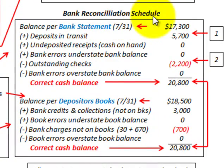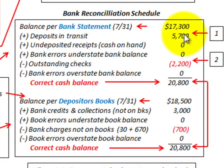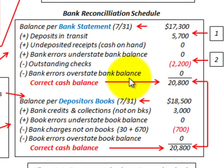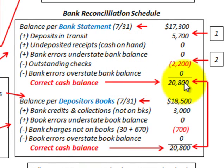Let's go back down to our bank reconciliation schedule. We have our deposits in transit of $5,700, and we add that to the balance per the bank statement. Then we subtract outstanding checks of $2,200. The correct cash balance per the bank statement comes up to be $20,800.